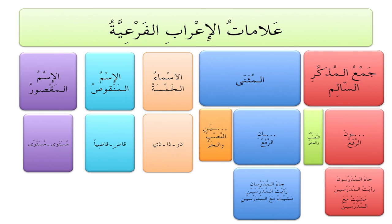Other nouns that take علامات الإعراب الفرعية are الأسماء الخمسة — they are five nouns and they are marked at their ending in a completely different way. The واو is used instead of a ضمة، the alif instead of a فتحة، and ياء instead of a كسرة. الاسم المنقوص behaves very differently — قاضٍ is supposed to be in المرفوع, but because it has a ياء at its end, it drops it, and what we see instead are two كسرتان instead of the ضمة. We have to recognize it as مرفوع even though it doesn't have a ضمة at the end.